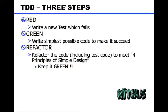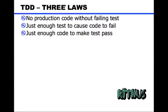There are three laws about test driven development that define how much code you can write to make a test fail. The first law is: no production code without a failing test. So if you don't see a red bar, you are not going to code. You write new code only when there is a failing test.